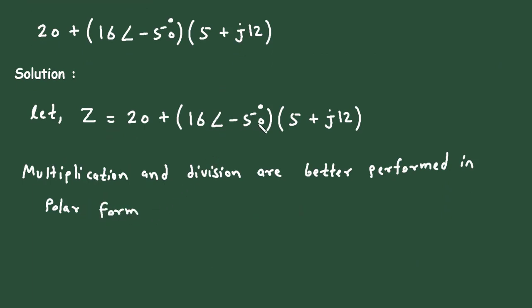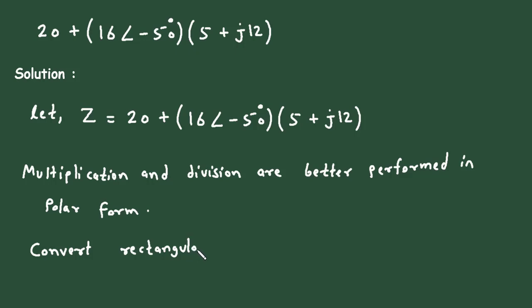So here we can see part of the expression is already in polar form, but the term 5 plus j12 is not in polar form — it is in rectangular form. So we will convert this rectangular form to polar form.